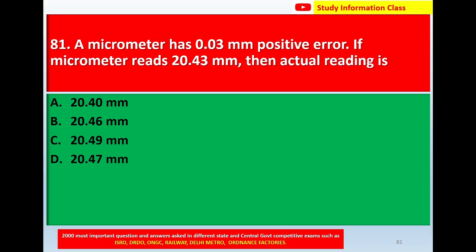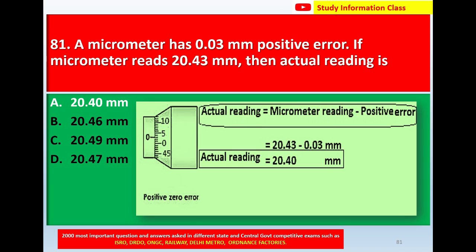Question number 81: A micrometer has 0.03 mm positive error. If the micrometer reads 20.43 mm, then the actual reading is — option A: 20.40 mm, option B: 20.46 mm, option C: 20.49 mm, option D: 20.47 mm. Correct answer is option A: 20.40 mm.